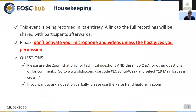Some brief housekeeping: I'd like to use the Zoom chat only for technical issues and use Slido for Q&A — for your questions and comments relating to the actual subject matter of the session. Go to Slido, put in the EOSC Hub week code and select in the dropdown this session: 19th of May, issues and cross-border. You should also have the ability to use the raise hand feature in Zoom.